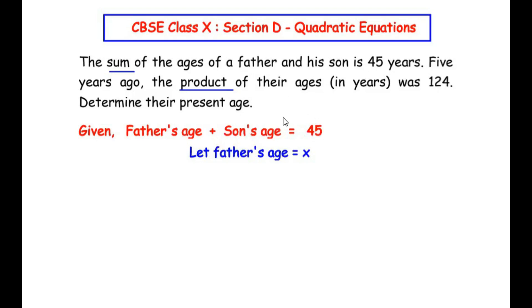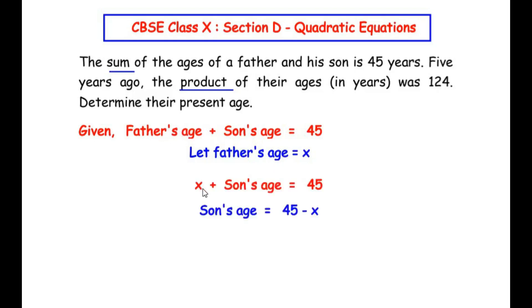We have generated a mathematical expression. Now let us consider that the father's age is x. Replacing father's age with x, we get x plus son's age is equal to 45. Rearranging for the son's age, we get son's age is equal to 45 minus x, by taking x to the other side of the equal sign.